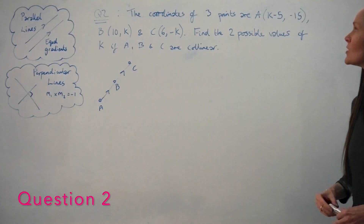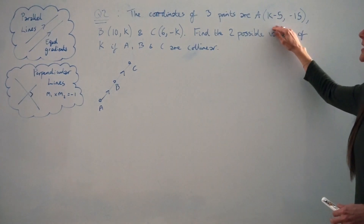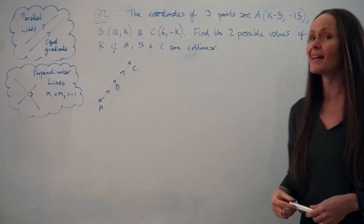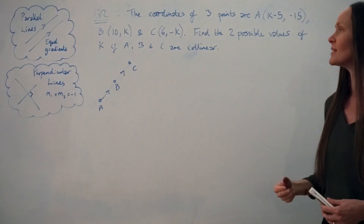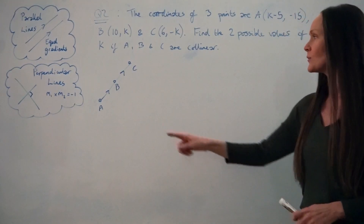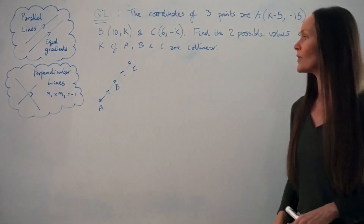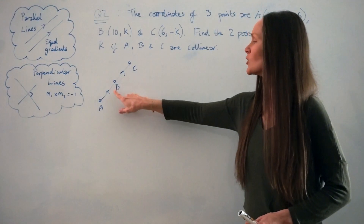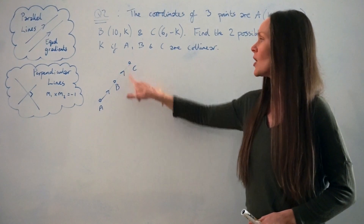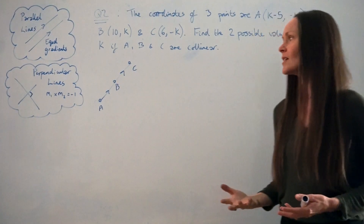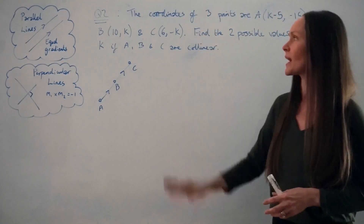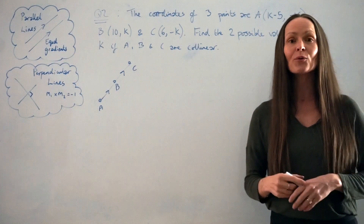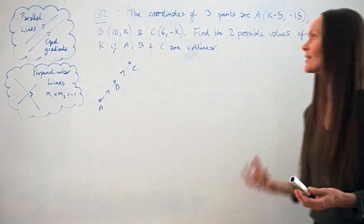In question 2, the coordinates of three points are A (K−5, −15), B (1, 0K), and C (6, −K). Find the two possible values of K if A, B, and C are collinear. So A, B, and C lie on the same straight line. If they're collinear, the gradient of A to B should be the same as the gradient of B to C. We'll work out expressions for both gradients, set them equal, and solve for K.